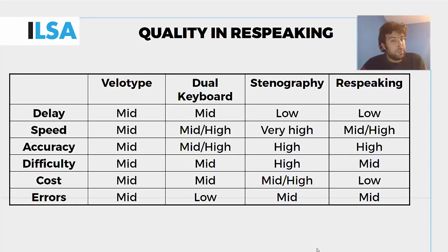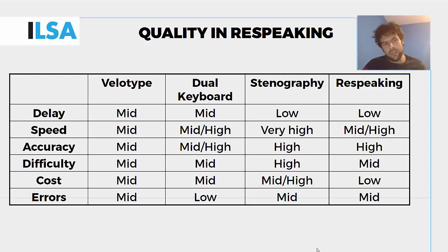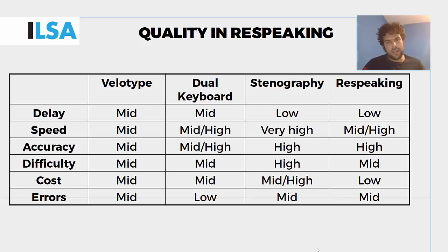Quality in respeaking could be measured through the use of different parameters, such as delay, speed, accuracy, difficulty, cost, or errors. We've seen that in Unit 1, but today, for this unit, I'd like to focus on accuracy.